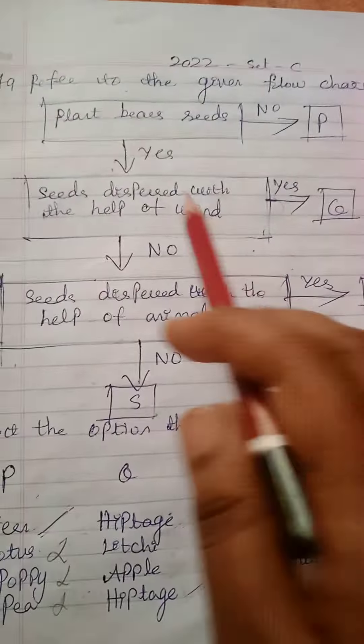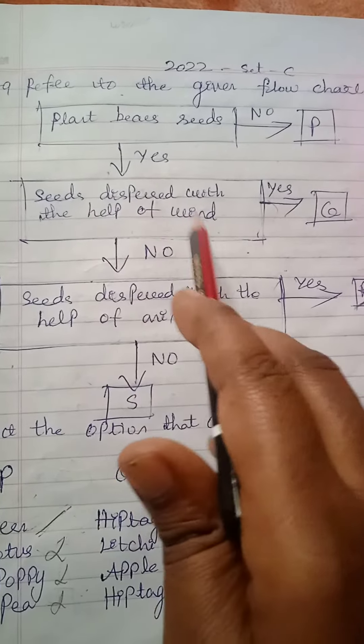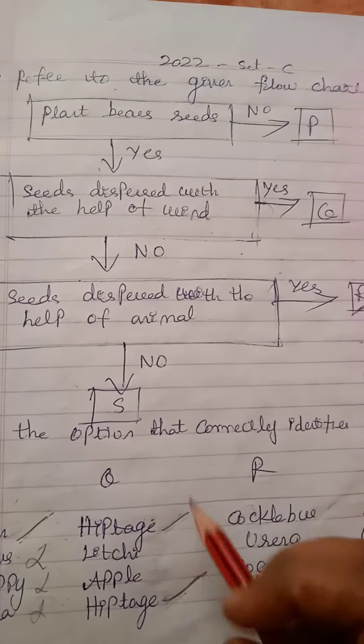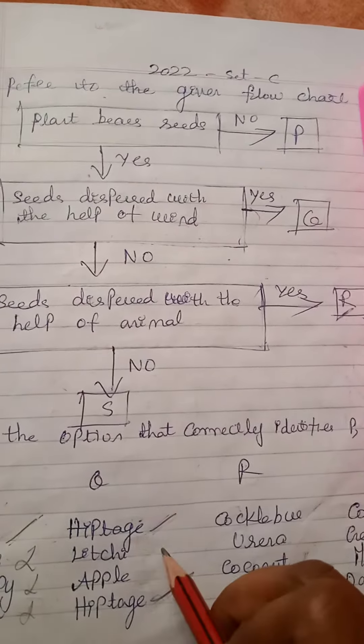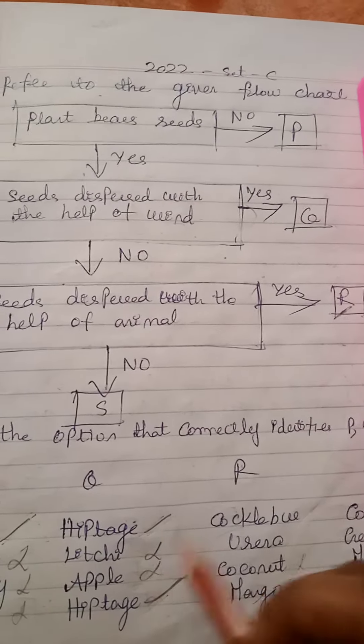Let's check into Q. Plant bears seeds - yes. Seeds dispersed with the help of wind - yes. Here Hiptage is the only plant that disperses its seeds by wind, and litchi and apple disperse their seeds by animal so they will not come.